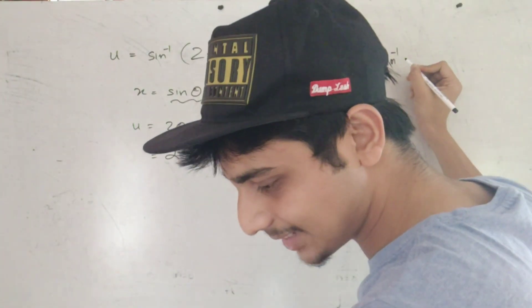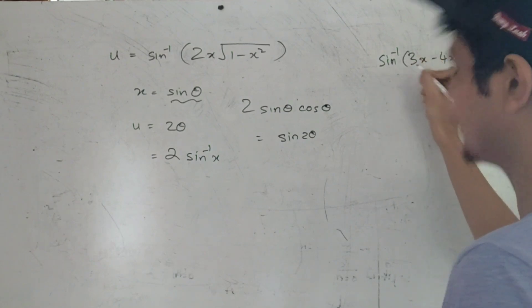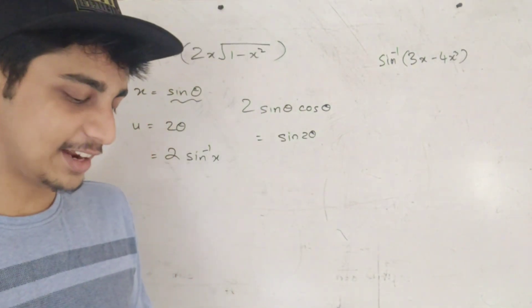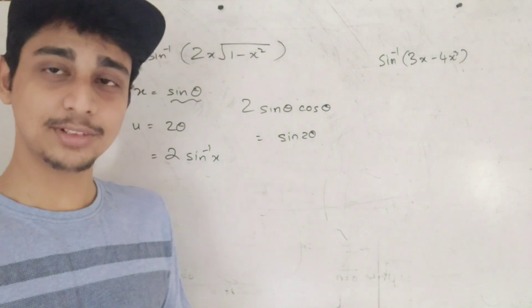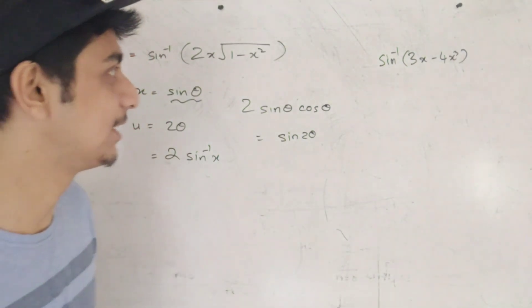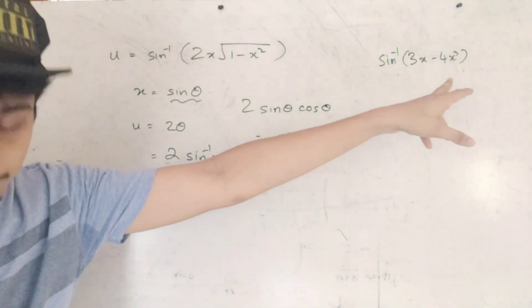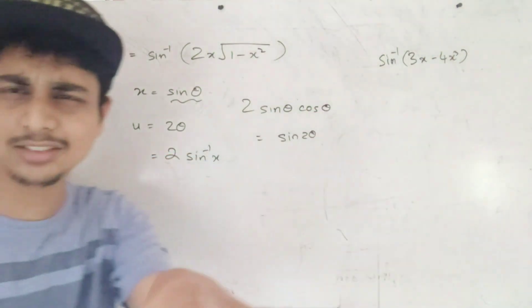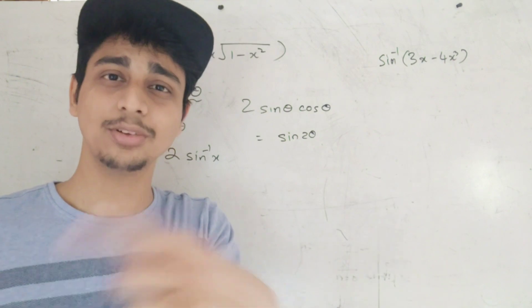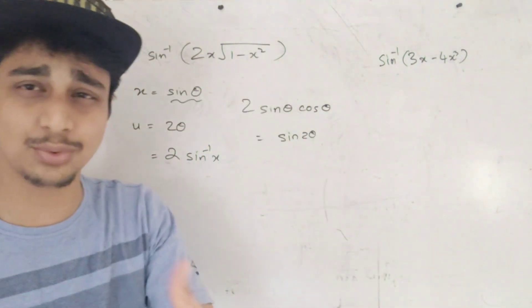Now for the denominator: sin inverse of 3x minus 4x cube. Since x equals sin theta, 3 sin theta minus 4 sin cube theta equals sin 3 theta. So sin inverse of sin 3 theta equals 3 theta, meaning v equals 3 sin inverse x.